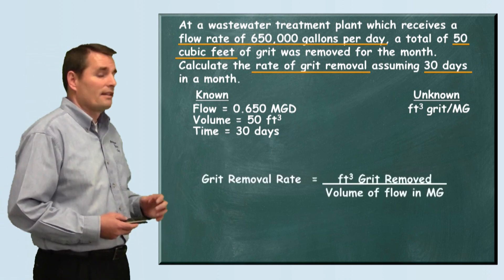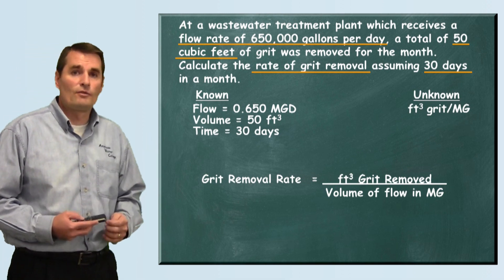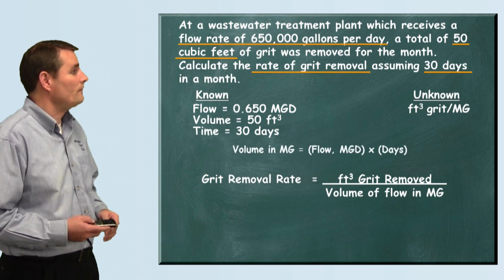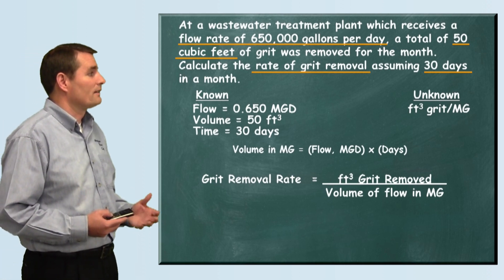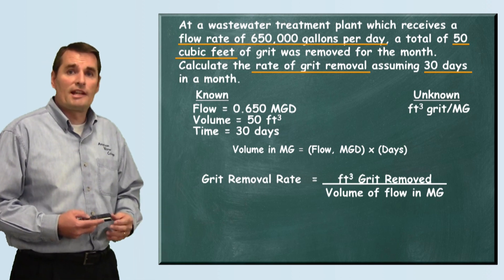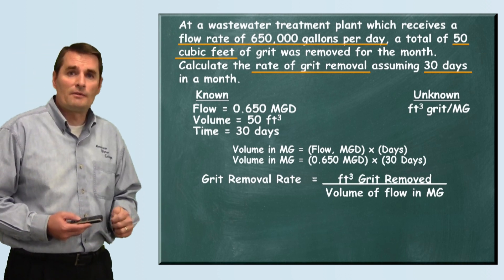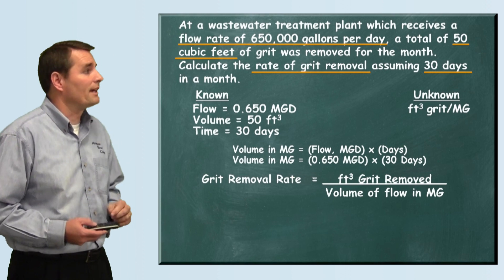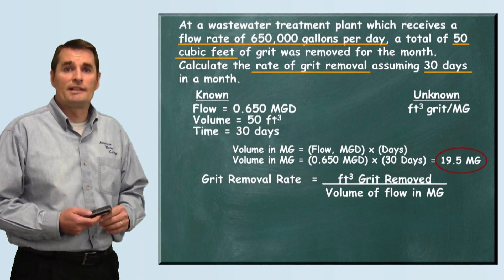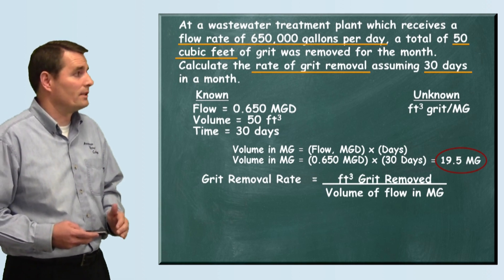Now that we have this information, let's set this up using a formula. The grit removal rate equals the cubic feet of grit removed divided by the volume of flow in millions of gallons. To find our volume over the 30-day period, we take our average daily flow of 0.650 MGD and multiply by 30 days, giving us a total flow of 19.5 million gallons.